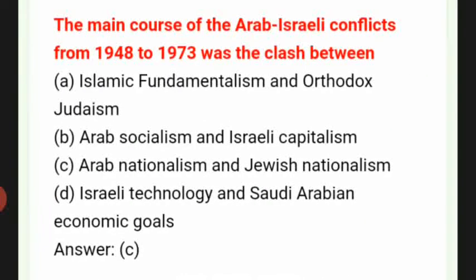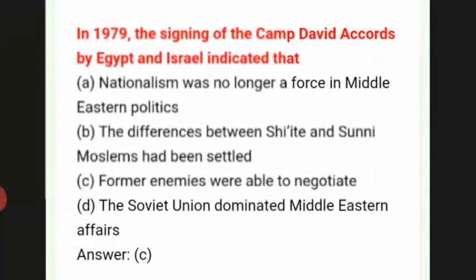The main cause of Arab-Israeli conflicts from 1948 to 1973 was the clash between Arab nationalism and Jewish nationalism. In 1979, the signing of the Camp David Accords by Egypt and Israel indicated that, answer C: former enemies were able to negotiate peace.